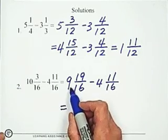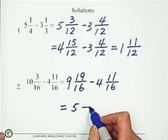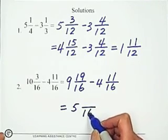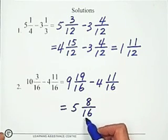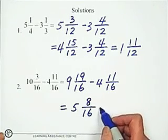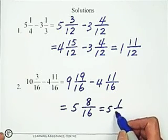So subtract the whole number portion, 5. Subtract the fraction portion, 8. And then we need to check. 8 over 16 can be simplified. Become 5 and 1 over 2.